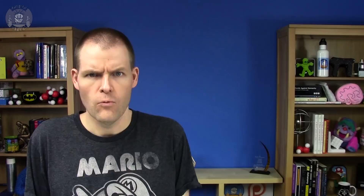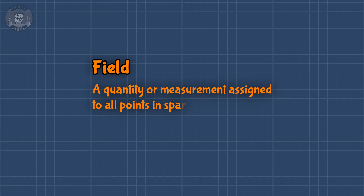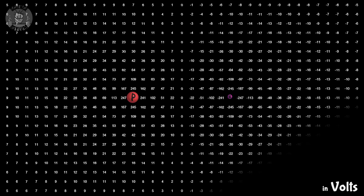But let's ask a simpler question first: what is a field? I did a video on this before, but that was back in the early days, so let's go over this again. A field is a quantity or measurement assigned to all points in space. That's it — nothing more, nothing less. But quantities come in many different varieties, kind of like my clones. There are scalar quantities, which are just single numbers. A scalar field would be something like voltage or electric potential — a single number assigned to every point in space.